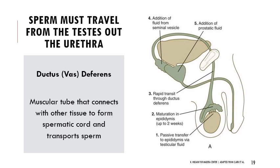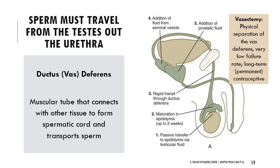Sperm then pass through the ductus deferens, also called the vas deferens — another muscular tube connecting the epididymis to the next structure. You may know this term from a vasectomy, which is a long-term contraceptive sterilization method where the vas deferens is physically separated. It has a very low failure rate of about 1 in 2000, though it's not foolproof. It's a relatively painless, long-term or permanent contraceptive.